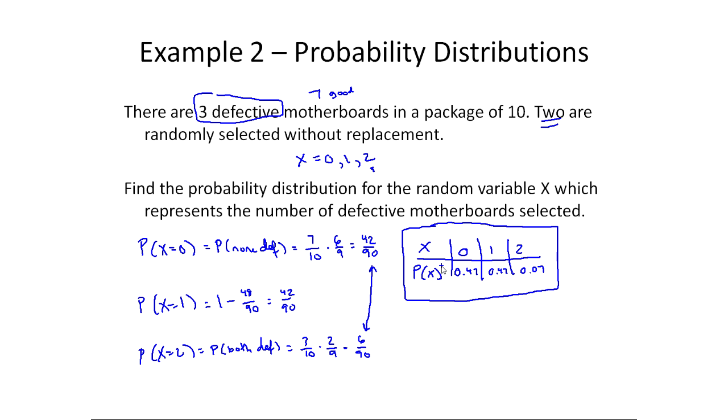Well, another thing I could ask about associated with probability distributions is the expected value. The expected value here would essentially be the mean. It would be, in the long run, if you were to repeat this experiment over and over again, how many defective motherboards would you expect to come across? So if you were to over and over again pick 2, on average, how many out of 2 would be defective? Expected value is the sum of each x times its probability.